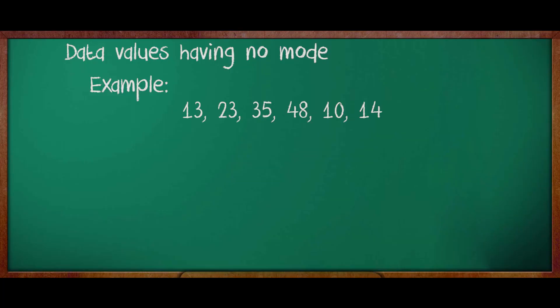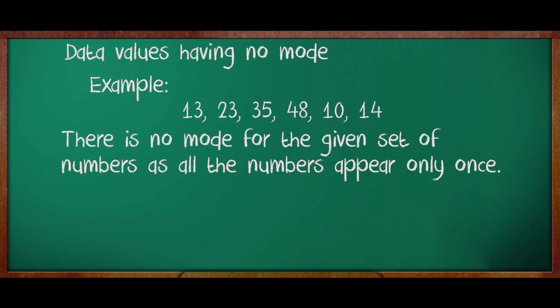What about the data values having no mode? For example, the numbers in the set of data are 13, 23, 35, 48, 10, and 14. There is no mode for the given set of numbers as each number appears only once. So, we say that there is no mode.